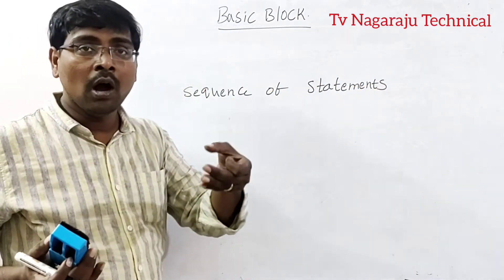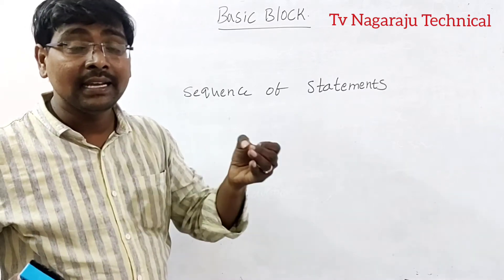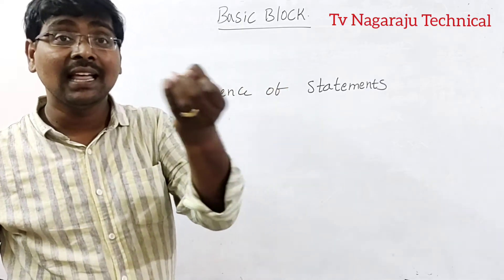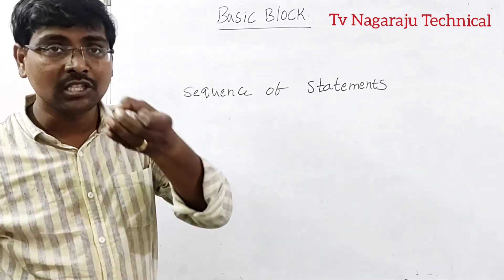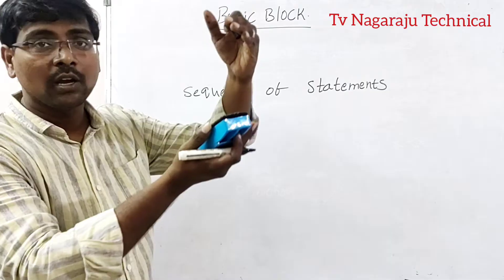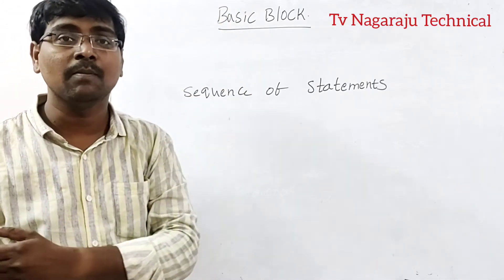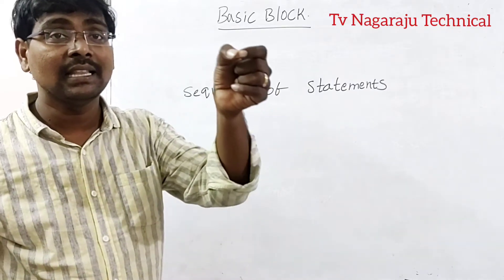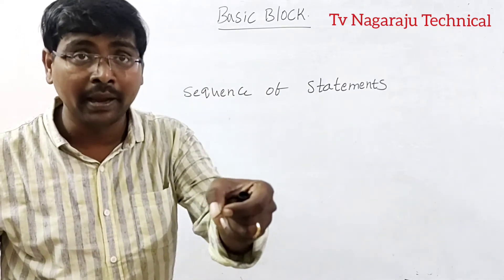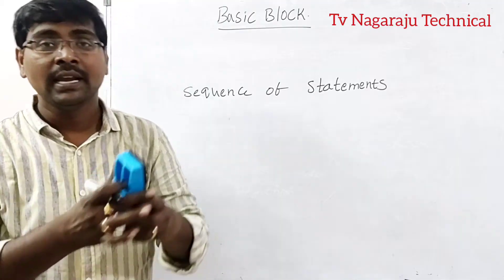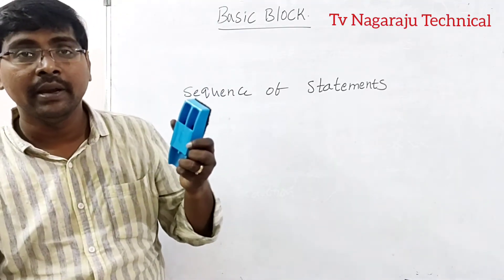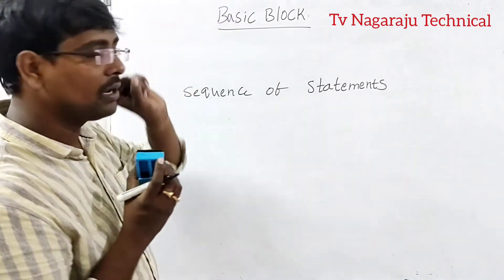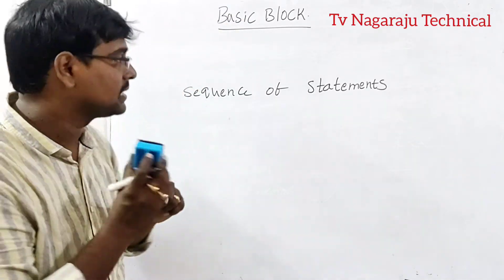The flow of control enters at the beginning of the block and leaves at the end of the block. In simple terms, some set of statements are written as a block wise. The flow of control enters at the beginning of the statement and leaves at the end without any halt. Now I will explain the concept of basic block with an example.